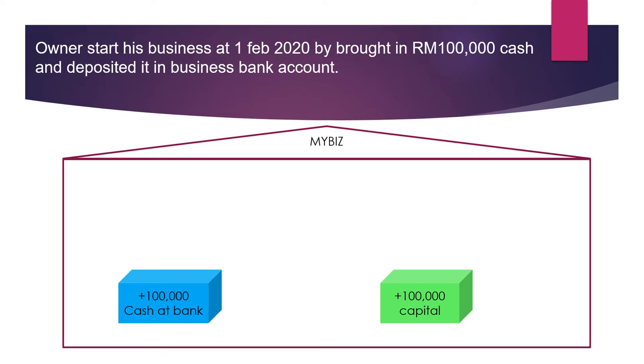So now in the business we have 100,000 cash at bank and a debt to the owner — that is capital of 100,000. Both are increased; they have been added up in the business.